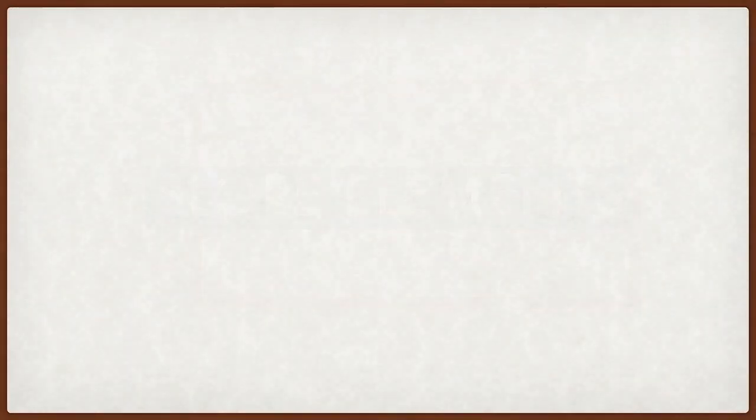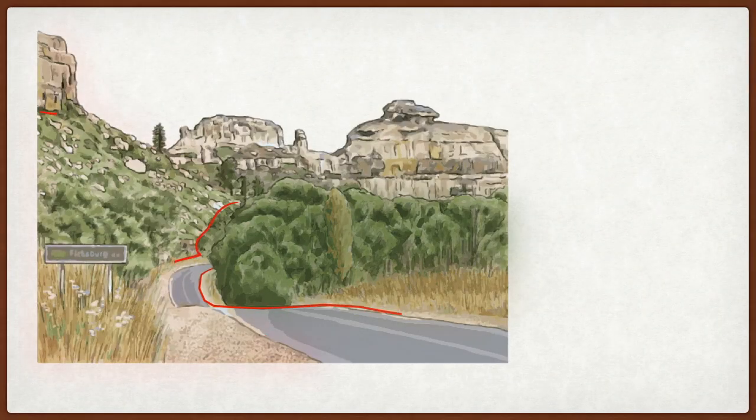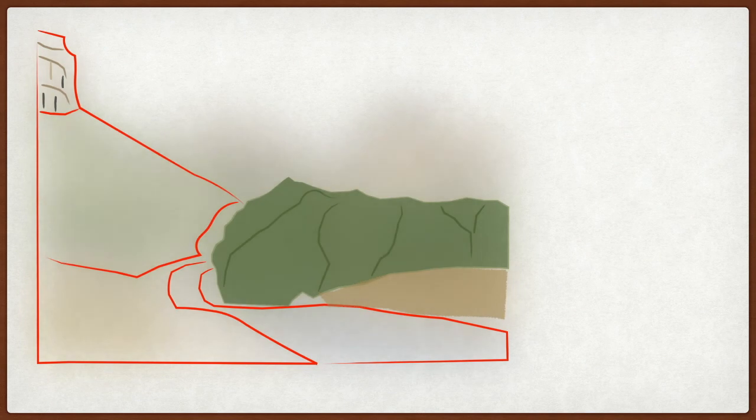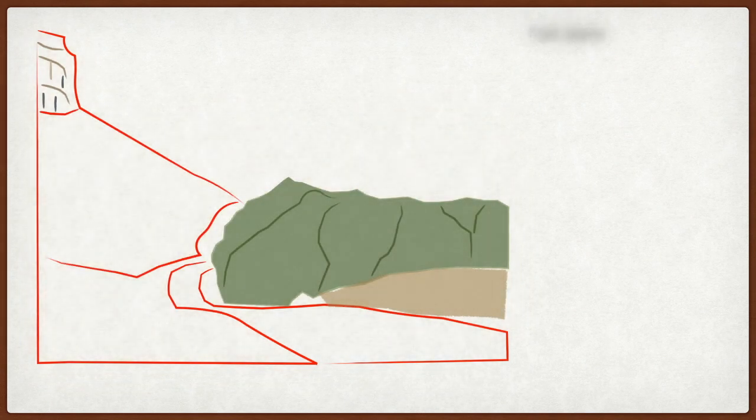So let's put this into context. Here we're seeing a landscape horizontal feature and now let's simplify by making it into a field sketch. And on the field sketch, we notice what happens.